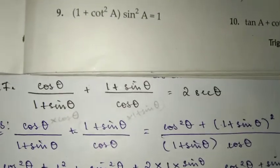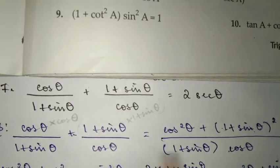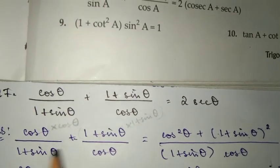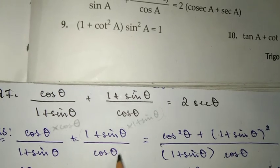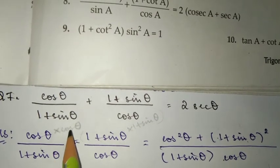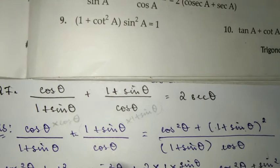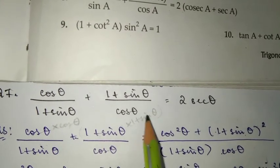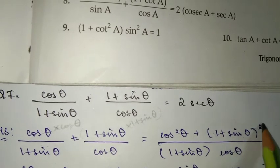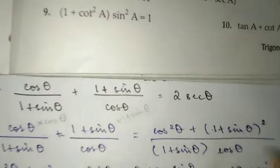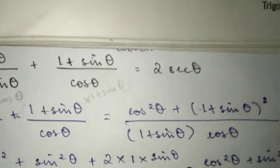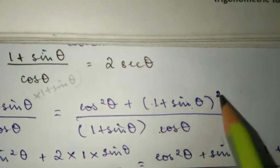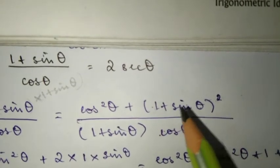Now let's recap: 1 plus sin theta and cos theta are multiplied in the first term, which gave us cos squared theta. The cos theta in the second term gave us 1 plus sin theta whole squared.